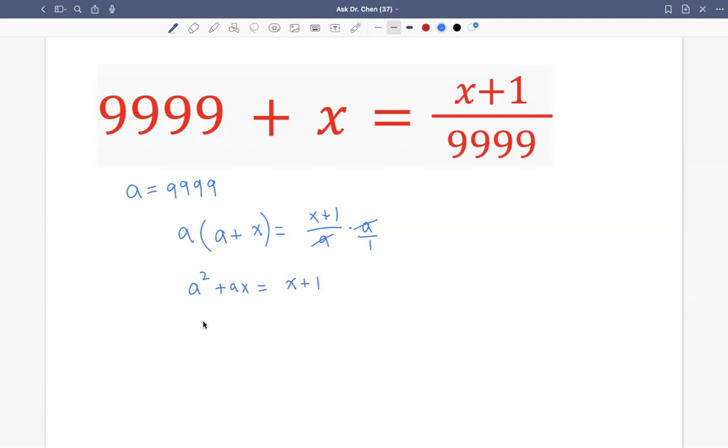Now let's move everything to the left hand side. So we have a squared plus ax. Move x to the other side becomes minus x. Move 1 to the other side becomes minus 1. That equals 0.